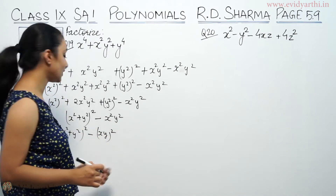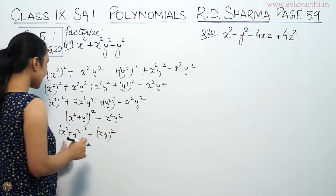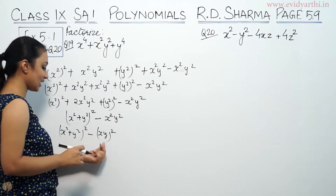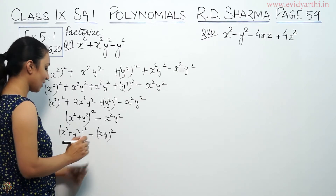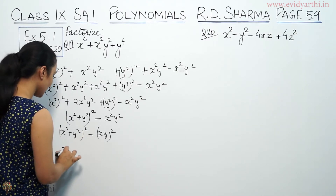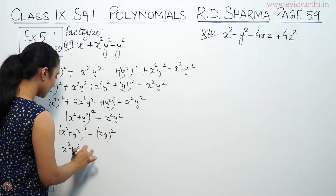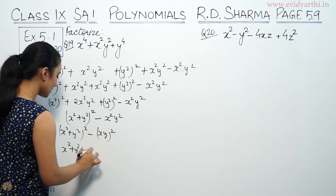So we can write x² plus y² whole square minus xy whole square. Now this is of the form A² minus B², so this is A plus B times A minus B.